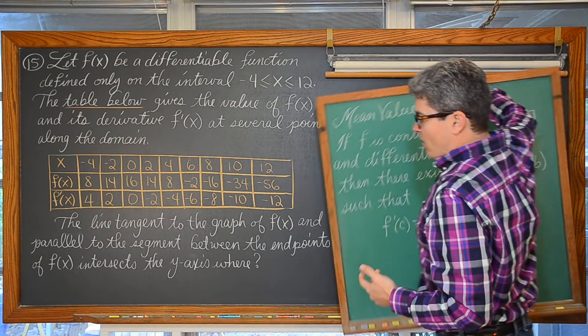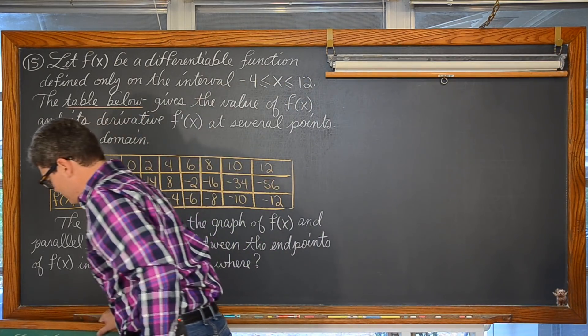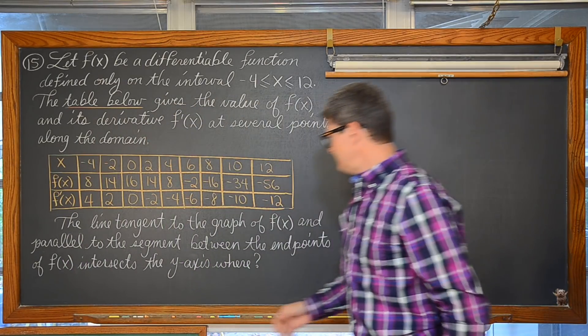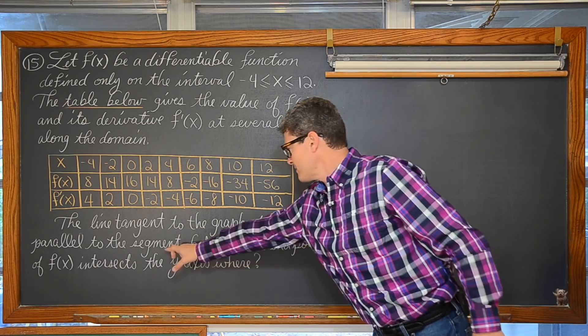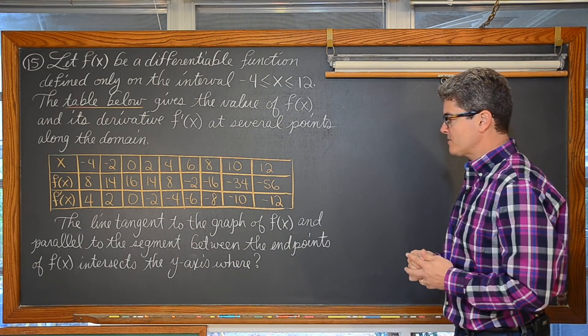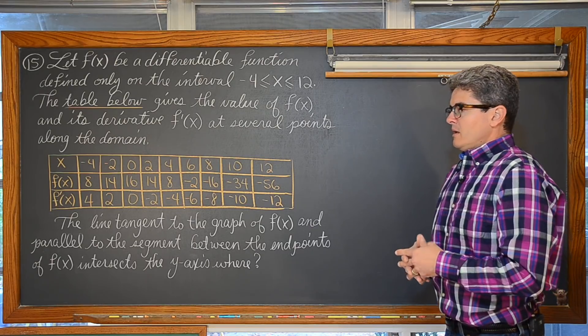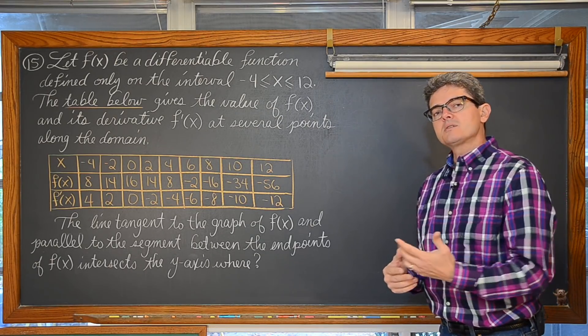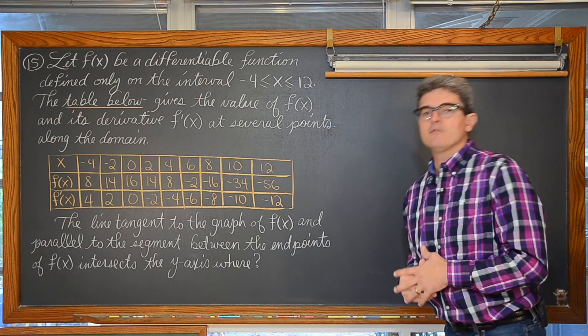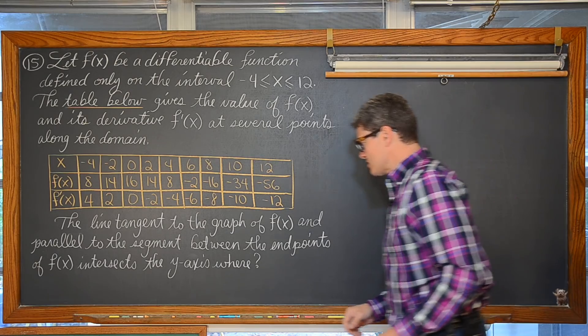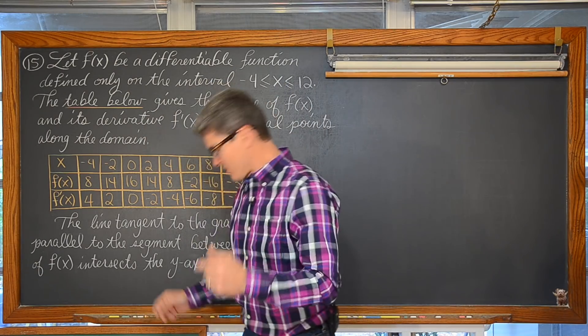And that is basically all we have to do with this problem. Find the slope of the secant line, the segment between some end points on a closed interval, that average rate of change, and use it to find that point c where the instantaneous rate of change is equal to the average rate of change. And that will help us set up the equation of the tangent line and ultimately solve the problem.